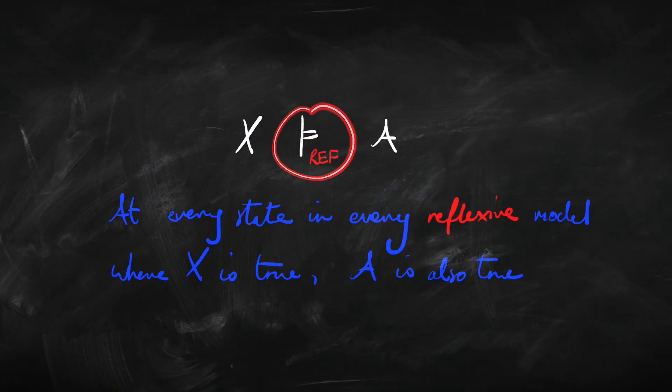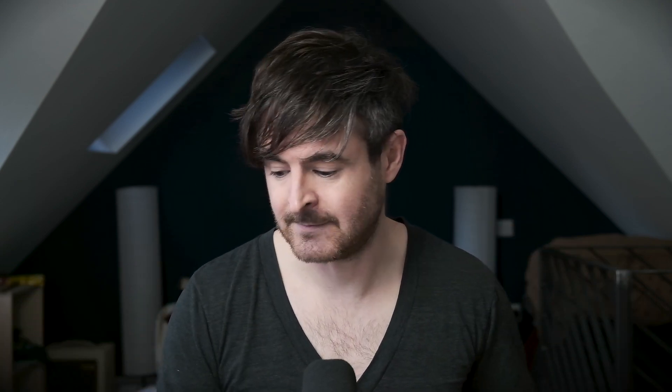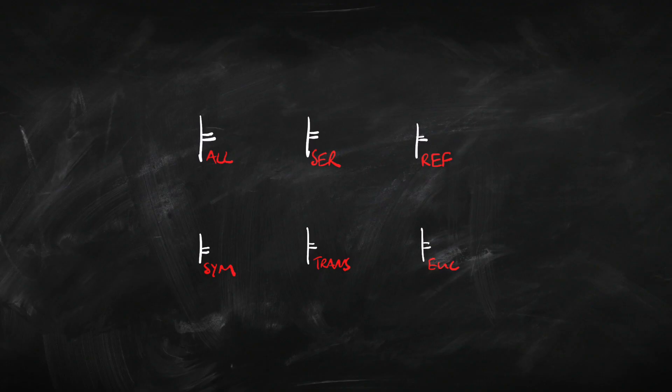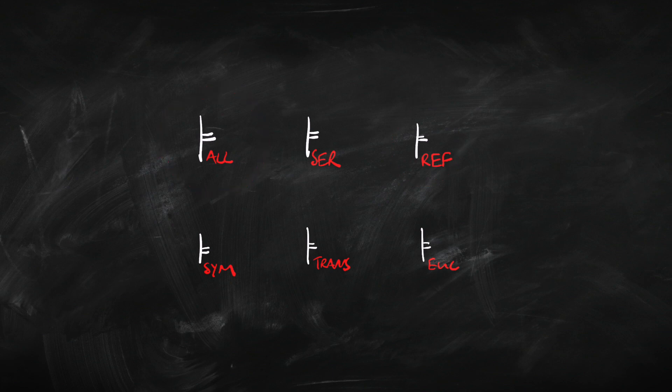Just bear in mind: when we're talking about reflexive-entailing, we're not talking about the entailment relation being reflexive — entailment relations are always reflexive and always transitive. We're talking about which models we're interested in. Here are the basic entailment relations: serial models, reflexive models, and so on. And this one covers all models — that's just our basic notion of entailment from previously, looking at all models whatsoever, irrespective of any condition on the accessibility relation.